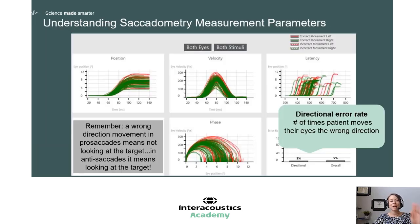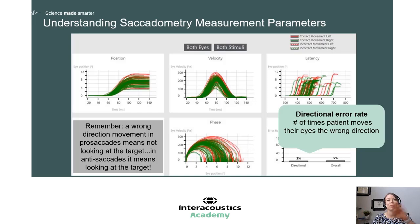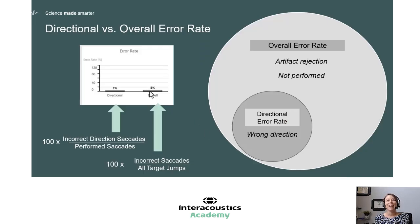There are five measurement parameters used in saccadometry, and a few are new compared to that random saccade test. The first is called directional error rate — simply the number of times the patient moves their eyes in the wrong direction. Remember that depending on the task, a directional error means something different. For pro-saccade, the patient is instructed to look towards the target, so a directional error means they're not looking towards the target. In anti-saccades, a directional error means they likely followed the dot instead of going the opposite direction. There's also an overall error rate shown on the summary screen — I'll describe that next.